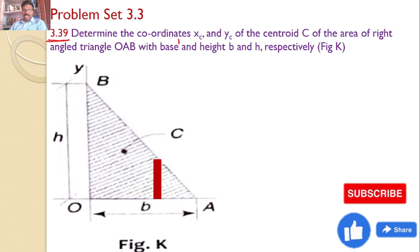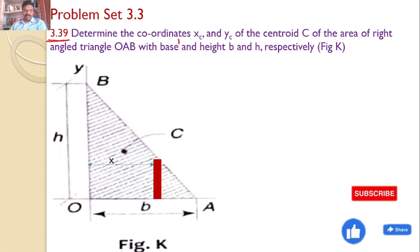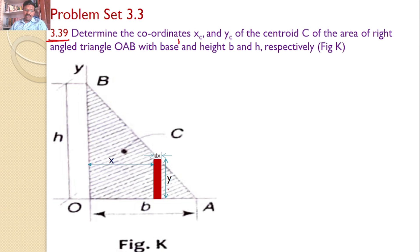Let us consider a small rectangular strip which is at a distance of X from the Y axis. The width of this strip is DX and the height of this strip is Y. Clearly, the height of this strip Y is not constant — it depends on the value of X. So we need to find a relation between X and Y. Let this be the centroid for the small rectangular strip, which is exactly at the center.